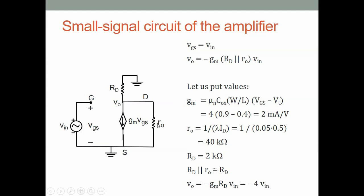Once the small signal circuit is drawn, r_o is in parallel with R_D. Since the bottom node is grounded, the current g_m * V_gs flows through the parallel combination of r_o and R_D. Therefore, the output voltage V_o equals g_m * V_in multiplied by (R_D parallel r_o), giving V_o = -g_m * (R_D || r_o) * V_in. This quantity is the voltage gain of the amplifier.